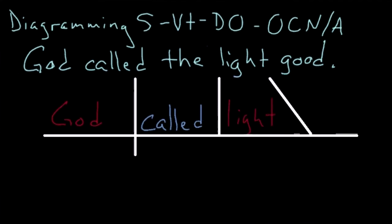And good is the adjective which is describing light. So, the adjective good goes in the same place as the object complement noun which is to the right of the left-leaning line.